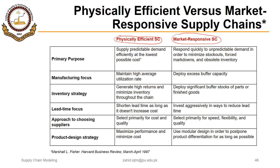A physically efficient supply chain focuses on cost — as we have seen repeatedly in the context of four production environments and five business strategies, efficiency is related to cost. The primary purpose of an efficient supply chain is to supply predictable demand efficiently at the lowest possible cost.